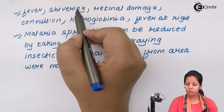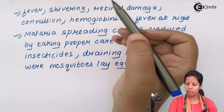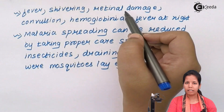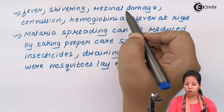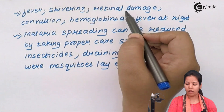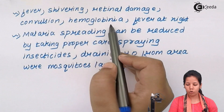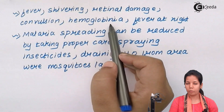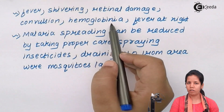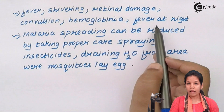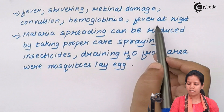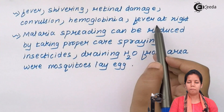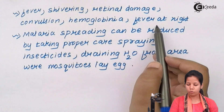Additional symptoms include fever, shivering — that is the feeling of cold — retinal damage, cornea damage of the eye, convulsions, and hemoglobinuria, which is a reduced hemoglobin or Hb level in your body. Fever which is intense at night are some of the classic symptoms of malaria at a high or advanced stage.